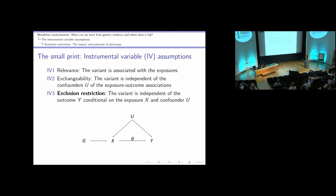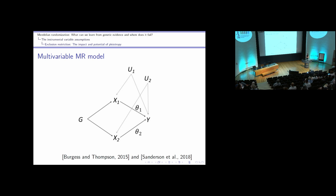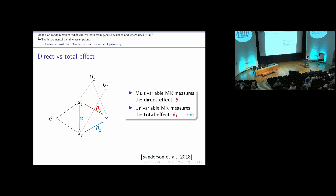The third assumption, the exclusion restriction — also known as the no pleiotropy assumption — states that there is no other pathway connecting G to Y that doesn't go via X. However, measured pleiotropy gives us an opportunity to draw a more realistic picture of reality. The multivariable MR model includes more than one exposure and was devised to account for measured pleiotropy, but researchers found it also allows identification of likely causal exposures from a set of candidates. It measures the direct effect of X1 on Y not mediated by other exposures included in the model.